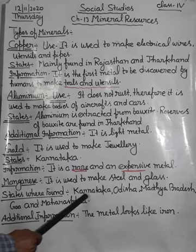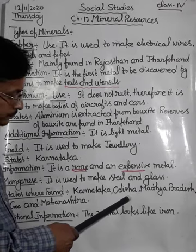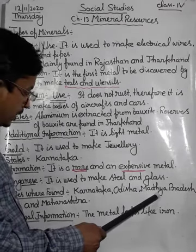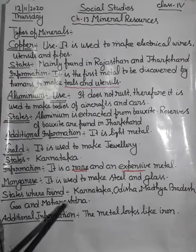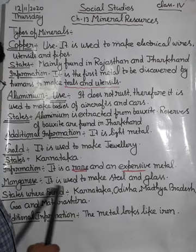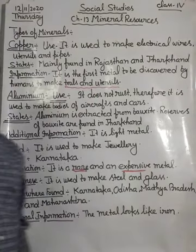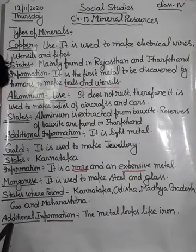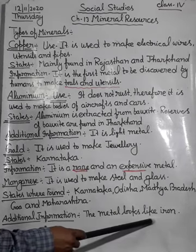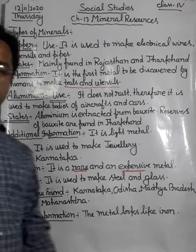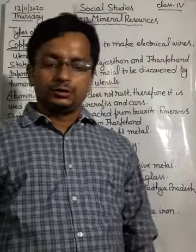The capitals of these states are: Karnataka — Bengaluru; Odisha — Bhubaneswar; Madhya Pradesh — Bhopal; Goa — Panaji; Maharashtra — Mumbai. These are the states where manganese is basically found. For additional information: manganese looks like iron. Keep in mind.